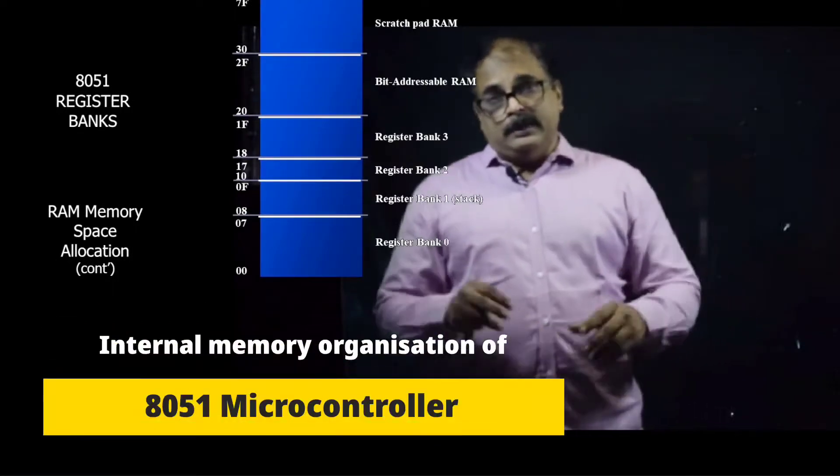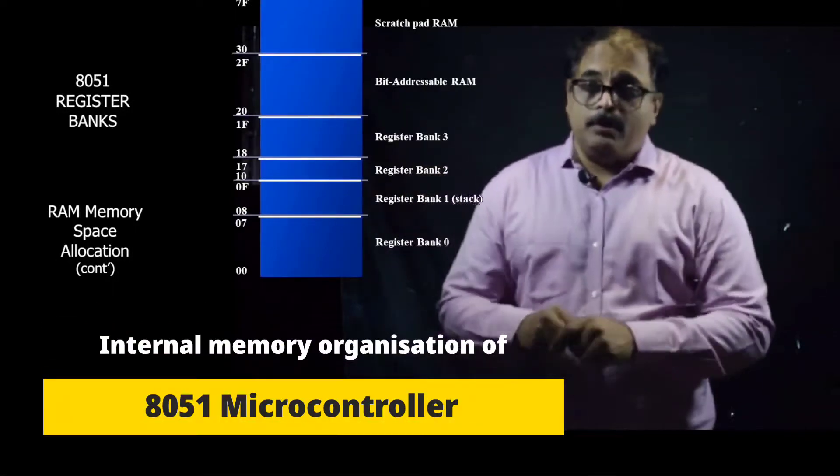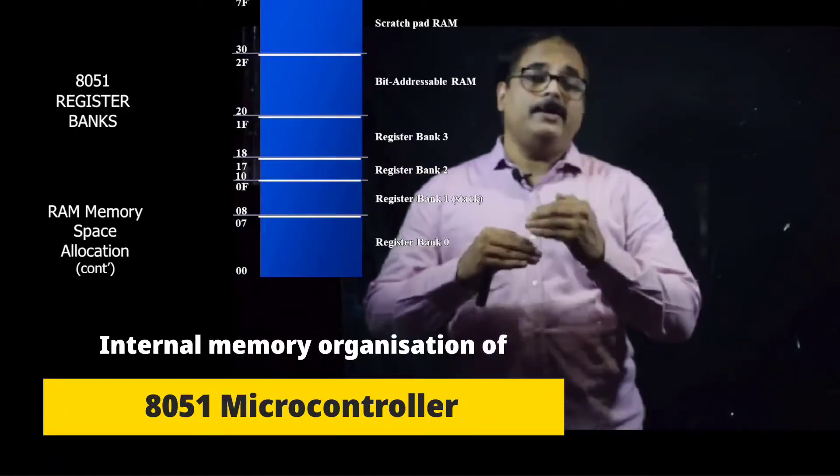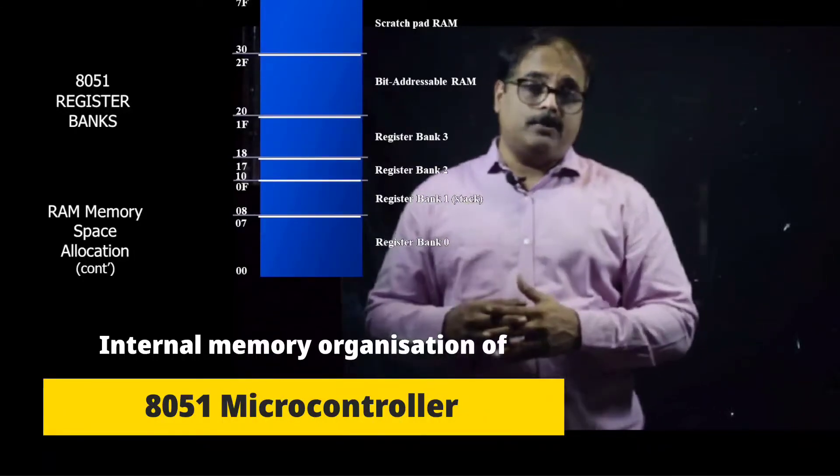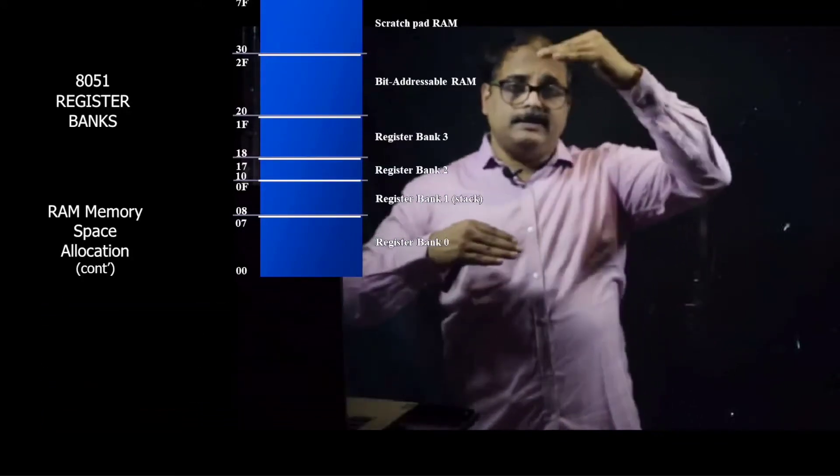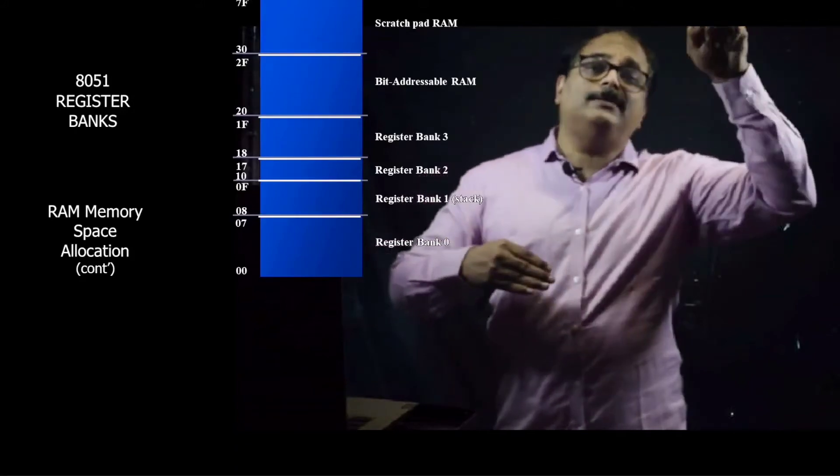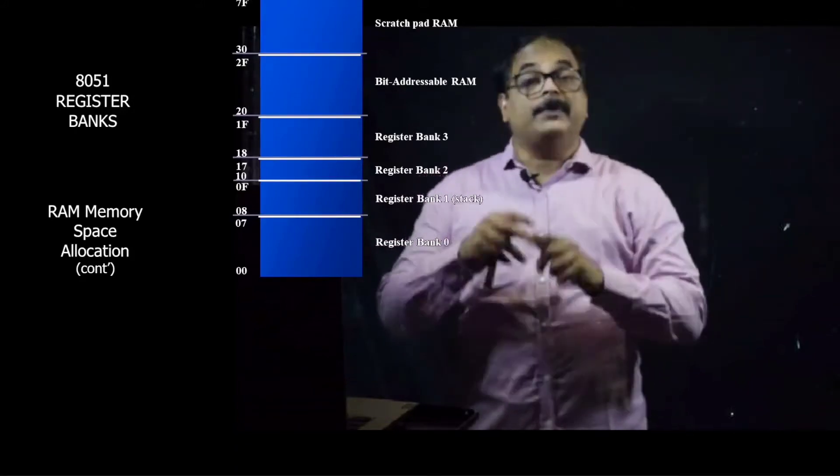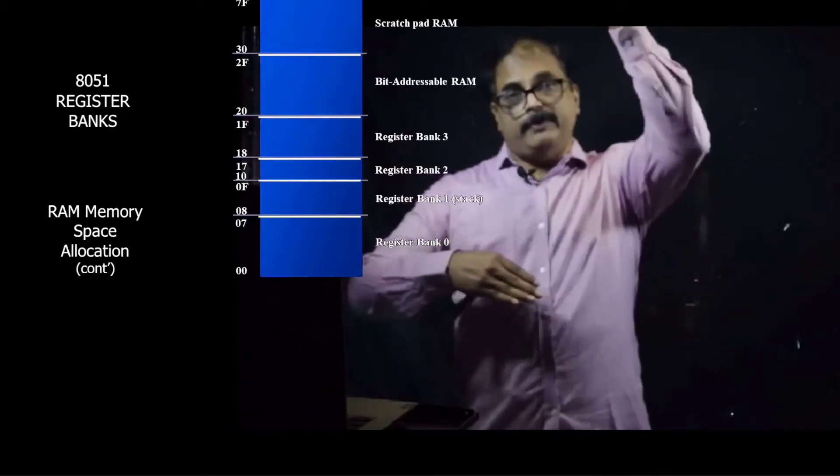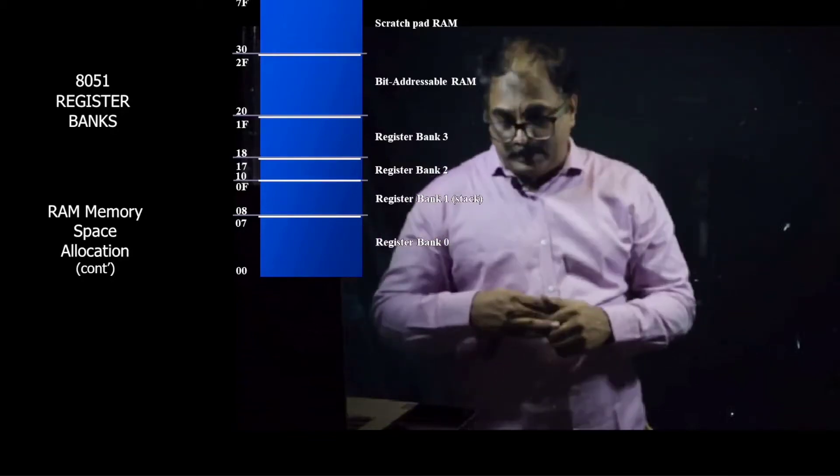As you can see on the screen, this particular slide will give you a clear idea of how exactly the RAM inside 128 bytes of RAM inside 8051 microcontroller is arranged. Its address starts from 00 and the highest address, the last address, the 128th byte, will be addressed as 7F. Precisely from 00 to 7F, these are the addresses of these registers.